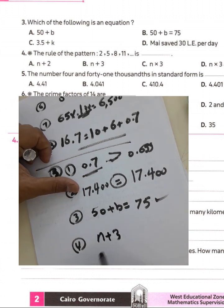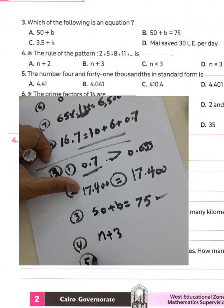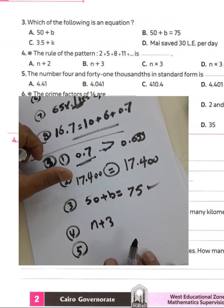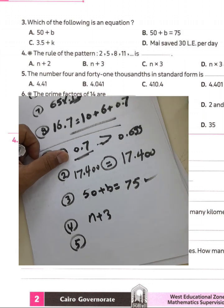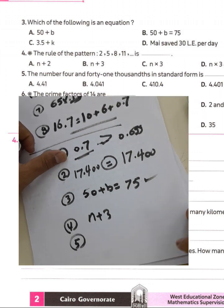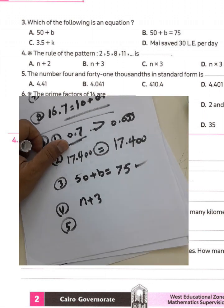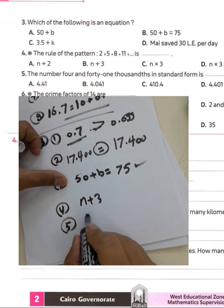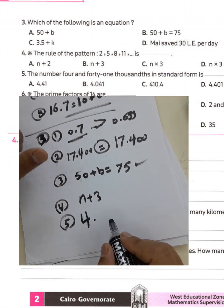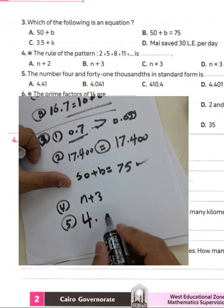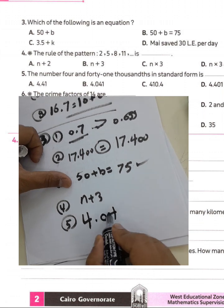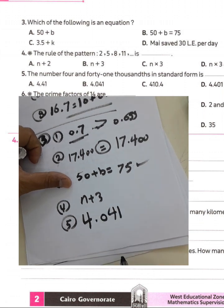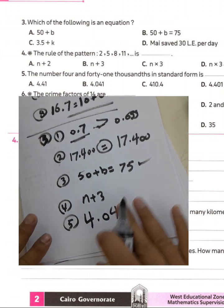Question number five: the number four and forty-one thousandths in standard form — we write 4.041. Forty-one thousandths in standard form is called the standard form of this number.